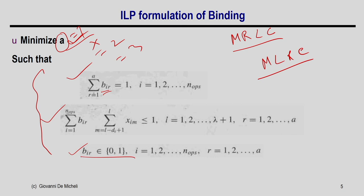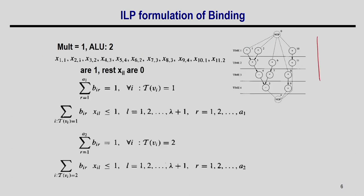Using the schedule discussed throughout, consider only multipliers: operations 1, 2, 3, 6, 7, and 8 are multiplier operations. Since a maximum of 2 operations execute in one clock, we need 2 multipliers. Operations 1 and 2 cannot be mapped to the same FU, and start times are known from scheduling.